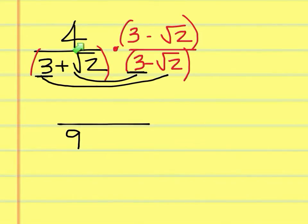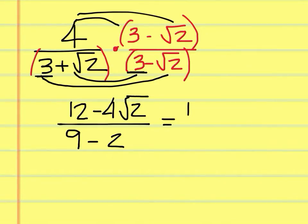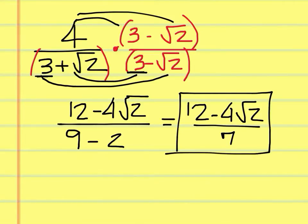Keep in mind, this is a positive square root of 2 times a minus square root of 2, so it's going to be minus 2. On the top, you distribute the 4 through those two items to get 12 minus 4 square root of 2. Now you can simplify on the bottom, keeping the top the same — you'll have a 7. So the answer is 12 minus 4 square root of 2 over 7.